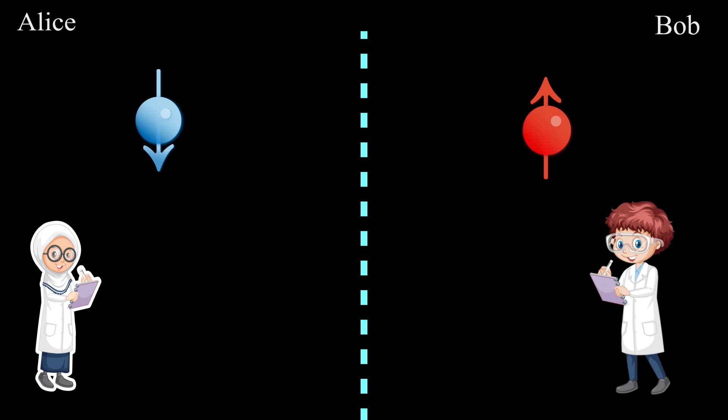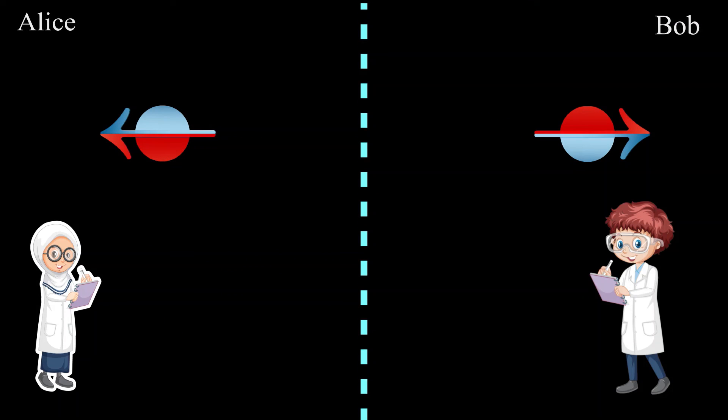When we have a product state, Alice and Bob can clearly describe what their state is. And what they do their state doesn't affect the other state.